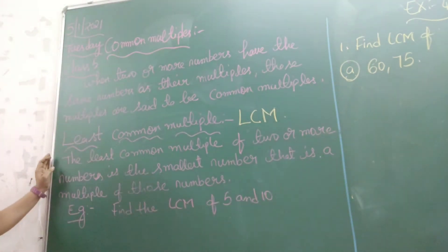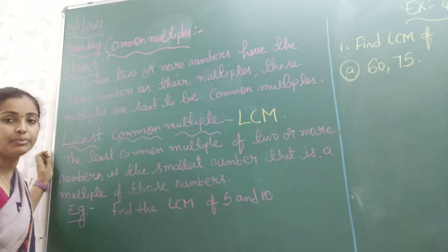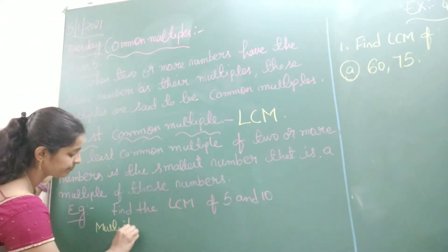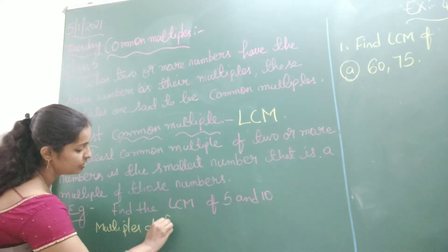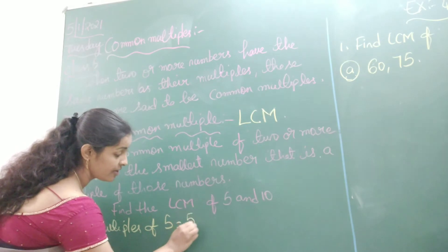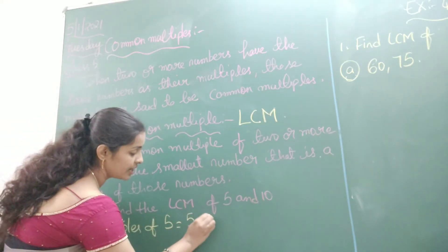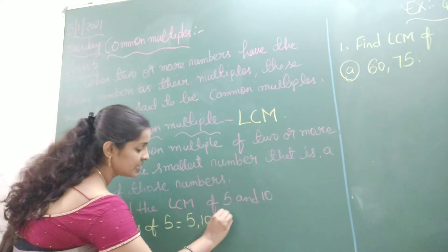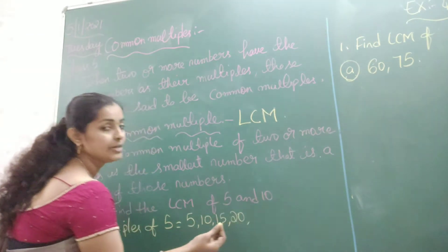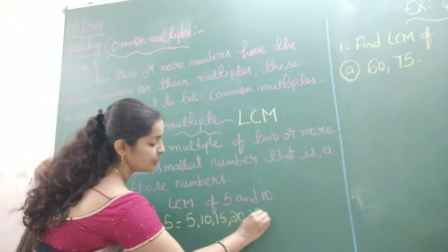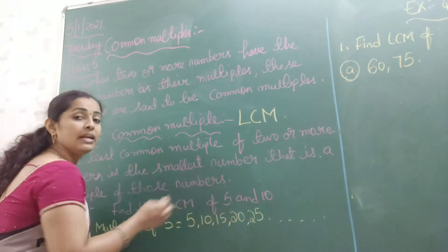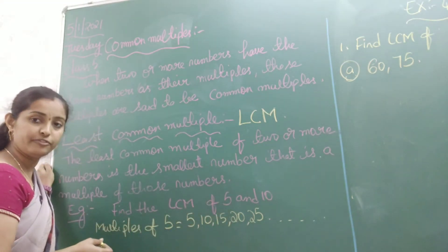So first let us find out the multiples of 5. The multiples of 5 are: 5, 10, 15, 20, 25, and so on. All these are the multiples of the number 5.